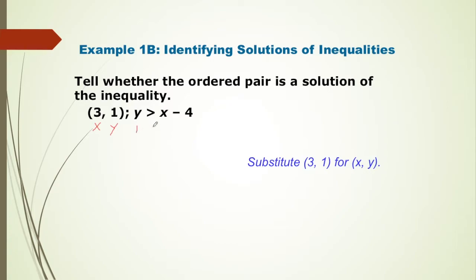So this will be 1 greater than 3 is x minus 4. So 1 greater than 3 take away 4 is negative 1.